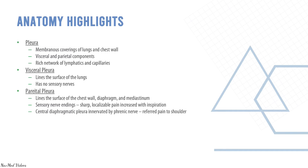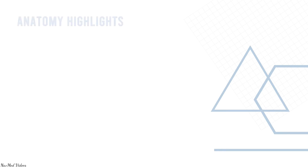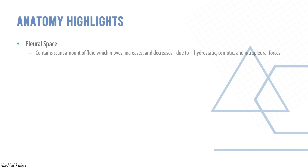The parietal pleura has sensory nerve endings, causing sharp, localizable pain that increases with inspiration. The central diaphragmatic pleura is innervated by the phrenic nerve and causes referred pain to the shoulder. The pleural space is the scanty amount of fluid present between the parietal and visceral pleura; it moves due to hydrostatic, osmotic, and interpleural forces.